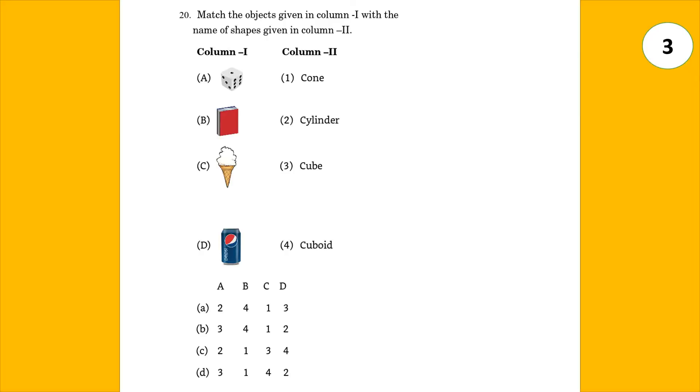Match the objects given in column 1 with the name of shapes given in column 2. So, here we can see A is cube, B is cuboid, C is cone and D is cylinder.